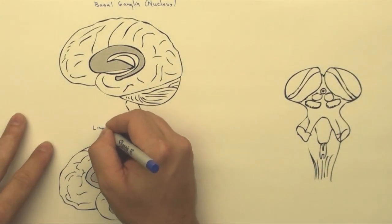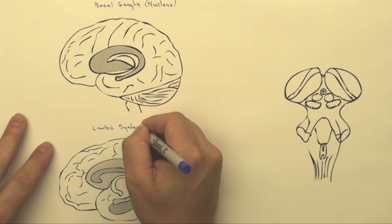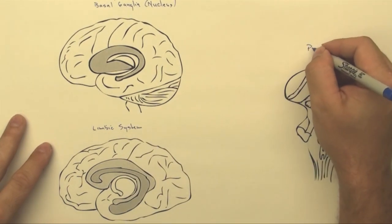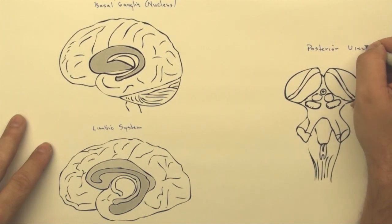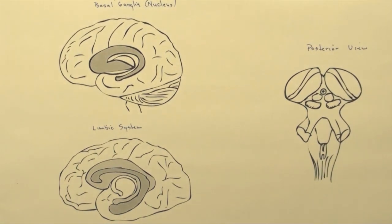This is going to be basically our focus on the limbic system. And this is just simply a posterior view. Just got a few more things that I want to add to our diagram and this is going to help us a little bit more figure out those things.